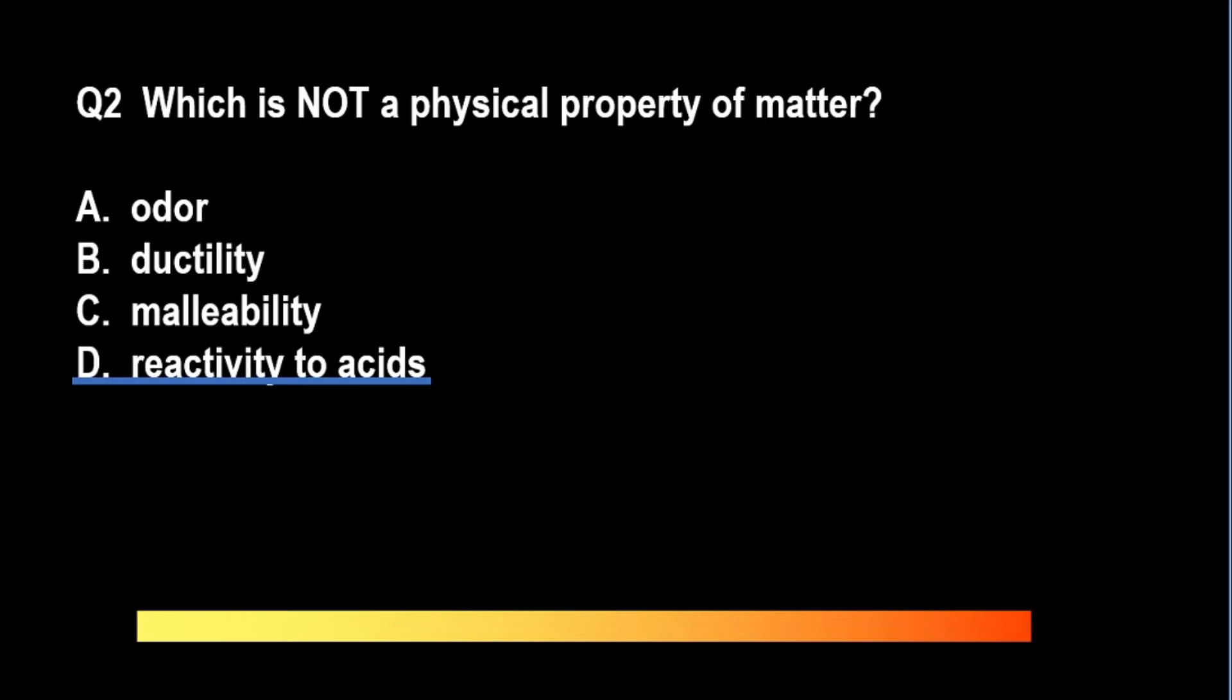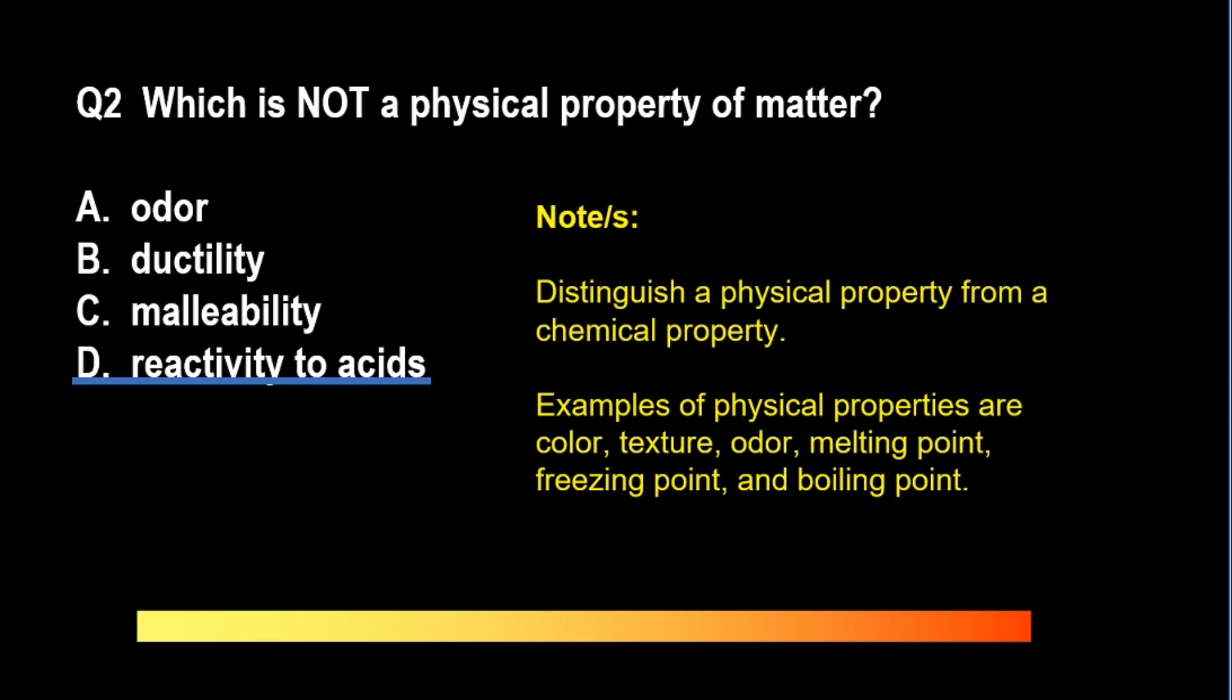Reactivity to acids is not a physical property because such property is determined by changing the composition of the substance. Here, review again that when you say physical property it refers to a characteristic of a substance that can be determined without changing the composition of that substance, such as texture, odor, hardness, ductility, malleability. You don't change the composition. Whereas a chemical property refers to a characteristic of a substance that is determined when the composition of the substance is changed and one or more new substances are produced. Examples of chemical properties are combustibility, flammability, and reactivity with other substances.